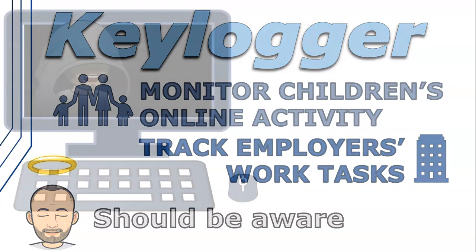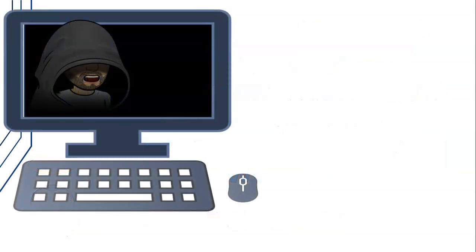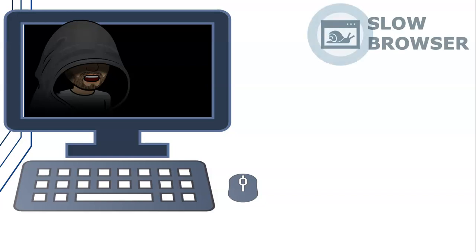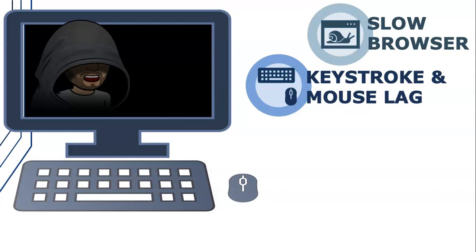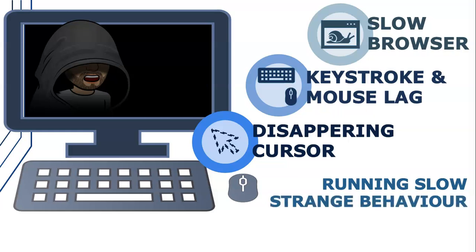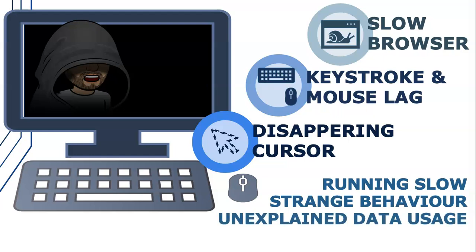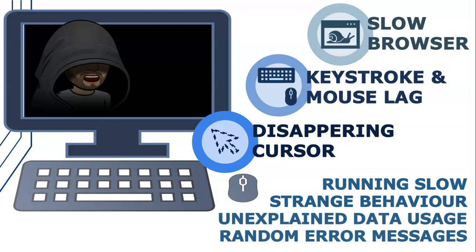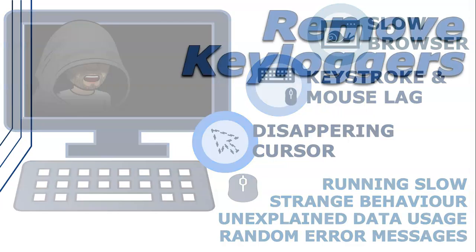If you're using a keylogger to monitor your child or employees, you should tell them that you're doing that so they are aware. Using keyloggers without permission is in many cases illegal and invasive. The three most common warning signs that you may have a keylogger on your device are: a slow browser, a lag in keystrokes and mouse movements, and a disappearing cursor.